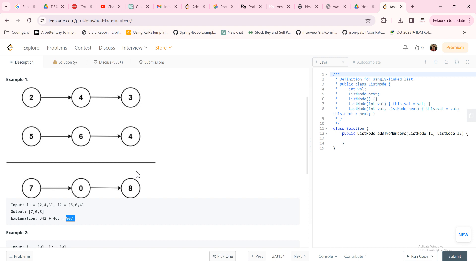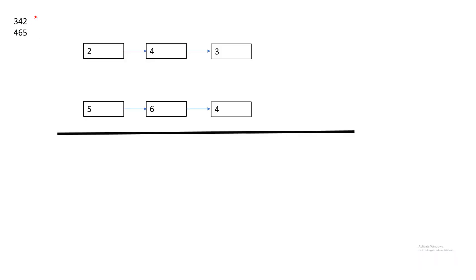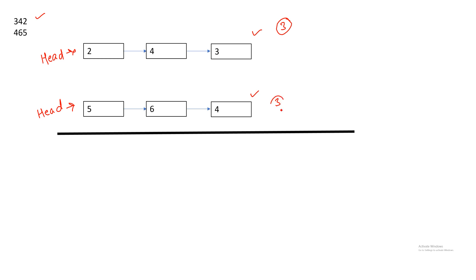Let's see how we can solve this problem. 342 is stored in 2-4-3 format with head pointing to 2, and 465 is represented as 5-6-4 with head pointing to 5. In this case, the number of nodes in both numbers is the same — here it's 3 nodes and there also it's 3 nodes.